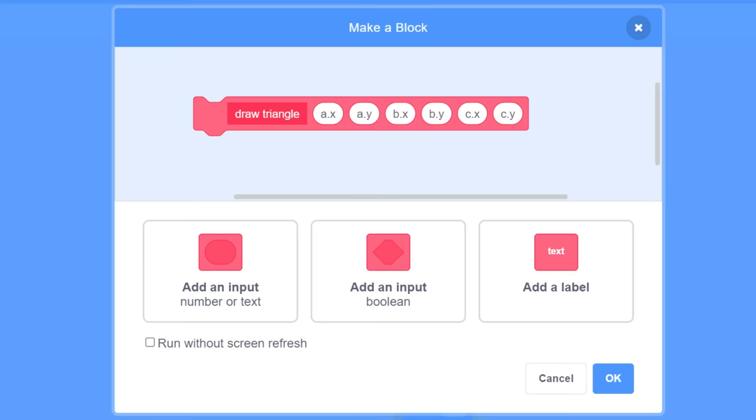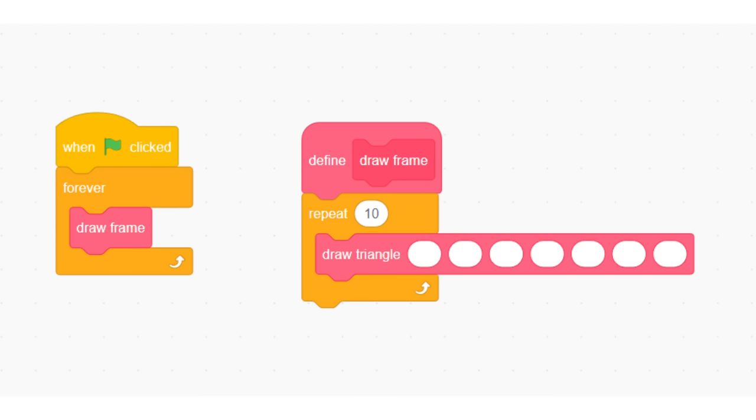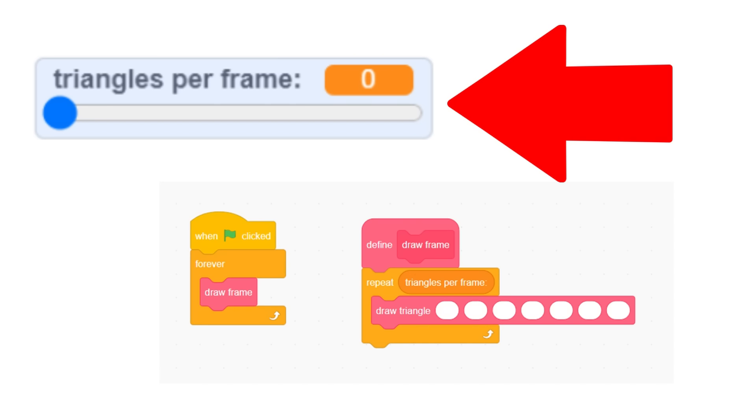The next thing I did was create a second custom block for drawing a single triangle, and I gave it six parameters for the x and y values of the triangle's three points. I also added an extra parameter for the triangle's color. Each time the draw frame block is called, it will draw the number of triangles equal to this slider variable.